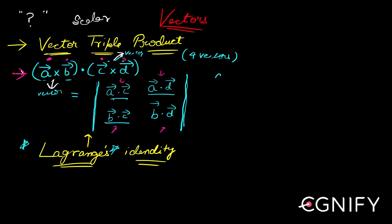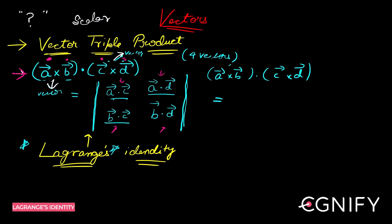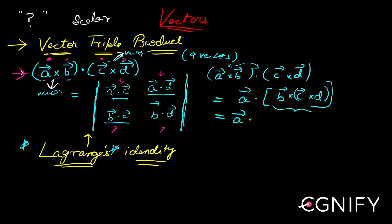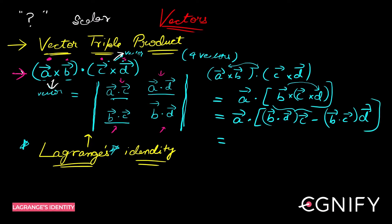Let's prove this. You have (a × b) · (c × d). You can swap the dot and cross — that's valid — so this becomes a · [b × (c × d)]. Now (c × d) is in a bracket, and this is the vector triple product part. For this, you use the formula: take b first, take the dot product of b with the vector far from it, which is d, so b·d times c, and subtract b·c times d.